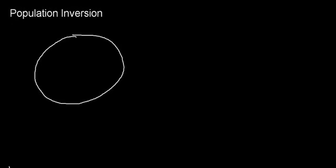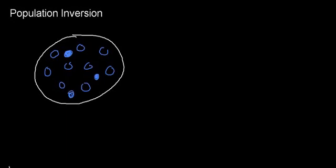In population inversion, let's say I have a population of molecules. Some can be excited, some can be in the ground state. But in any given situation, if I haven't provided them with energy, most of my molecules are going to be in the ground state. Only a very small fraction is going to be excited — this happens at random, due to kinetic energy or energetic transitions.